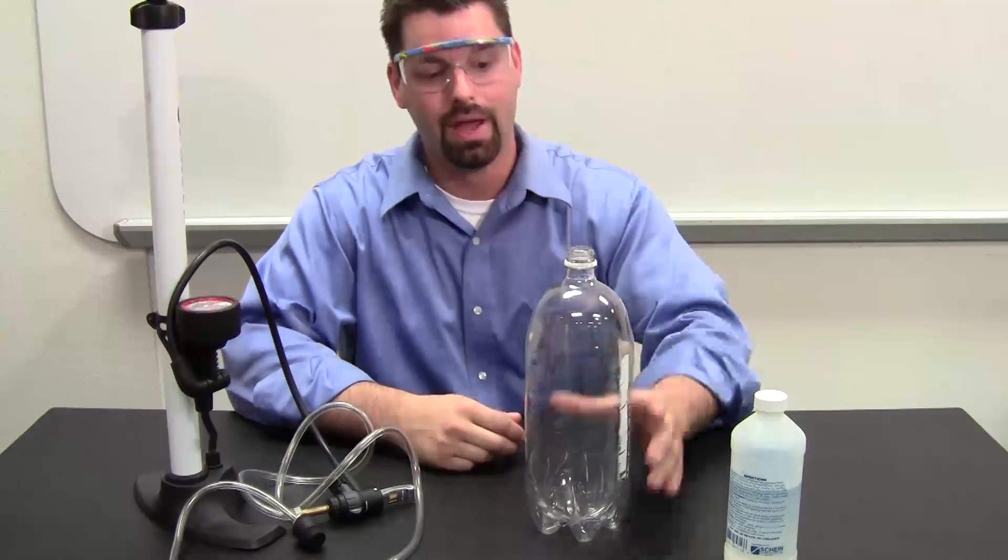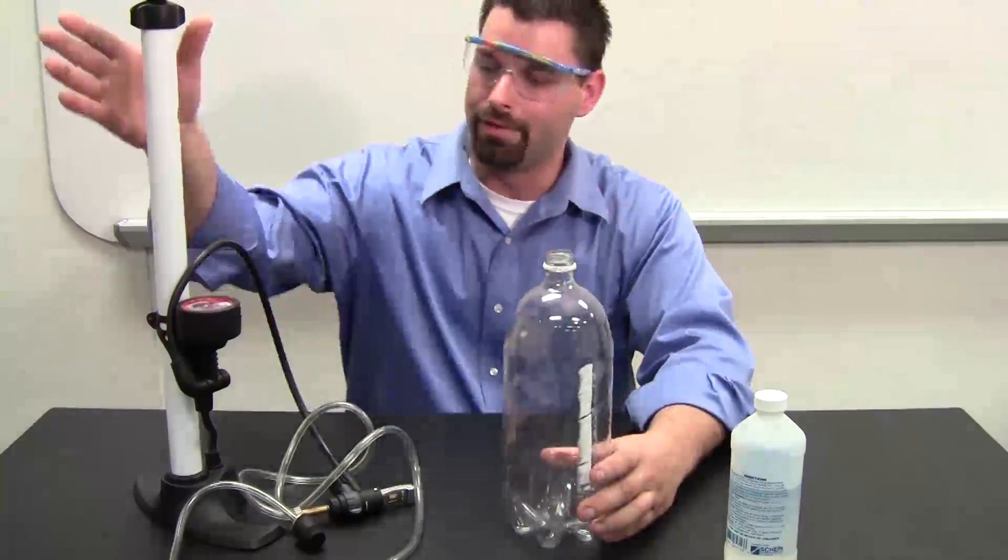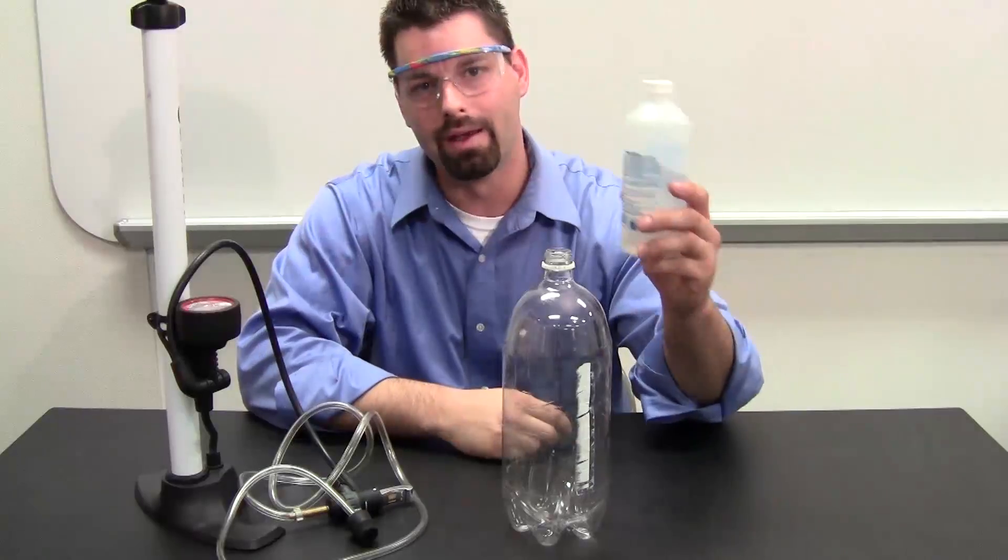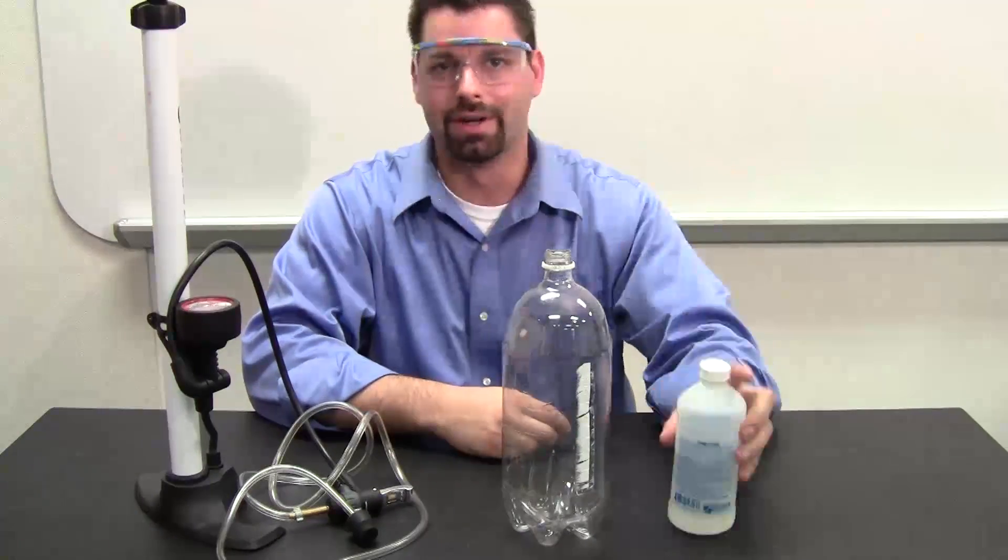Changing air pressure changes the temperature. So we have a soda bottle, we have a pump that has a rubber stopper on the end, and we have rubbing alcohol. That's where our water vapor is going to come.